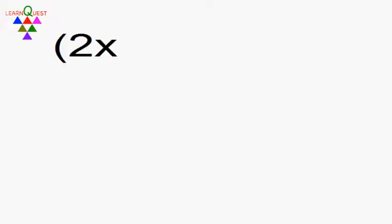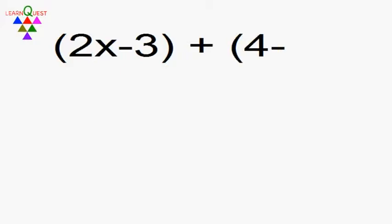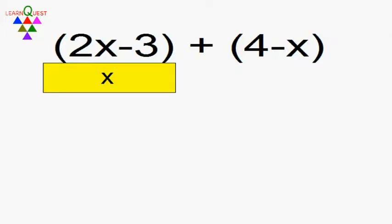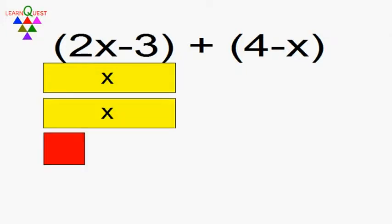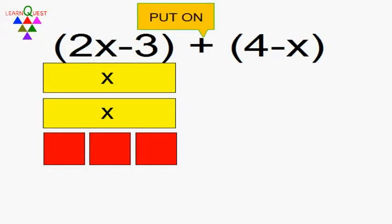Let's take one more example: 2x minus 3 plus 4 minus x. As before, we take the first term and put it on the table. 2x means 2 yellow rectangles, and minus 3 means 3 red small squares.